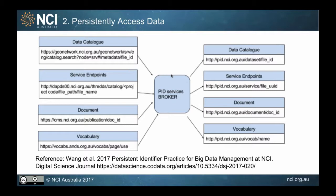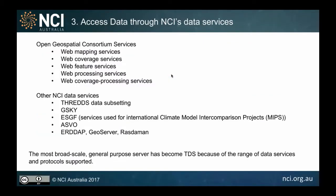Our data services fall into two main groups. One is OGC services. The other is more project-specific, such as being one of the largest nodes in the Southern Hemisphere as part of the Earth System Grid Federation, which aggregates climate models from global research institutes. We copy the main data models to serve Australian users. Another data service is called GSKY — a scalable data server that directly interacts with our file system.